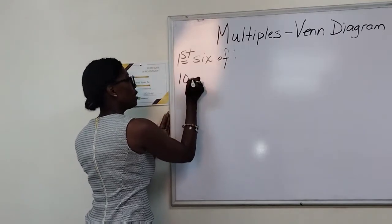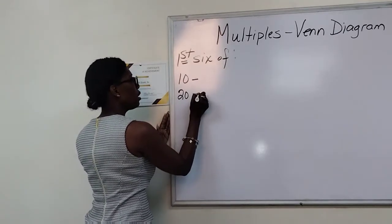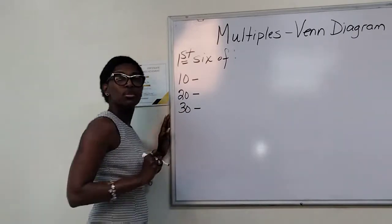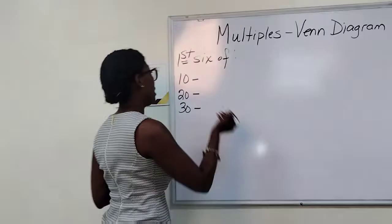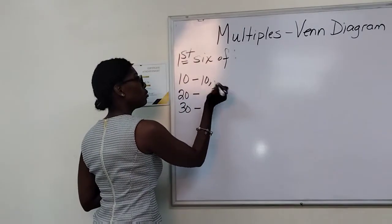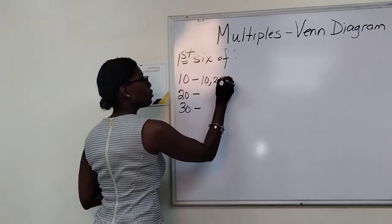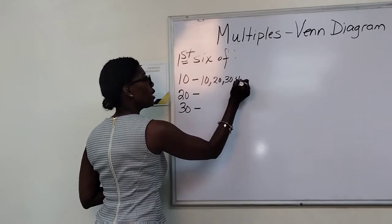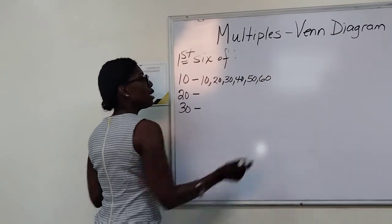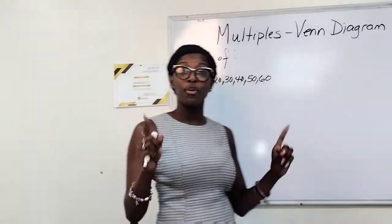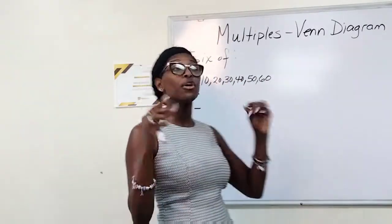So we're going to do multiples, first six of each. We got 10, we got 20 and we got 30. The first six multiples of 10 are: 10, 20, 30, 40, 50, 60. And we're stopping there because the first six.